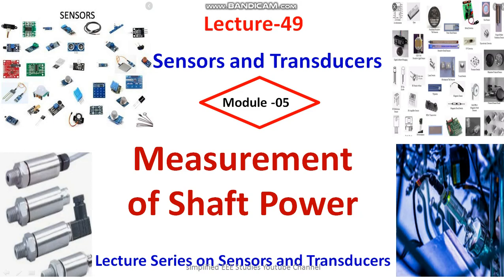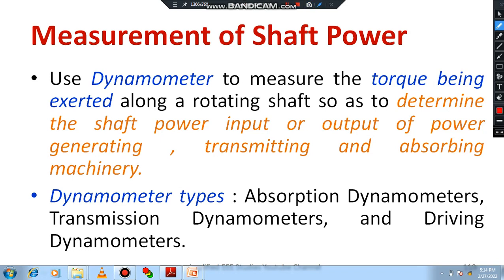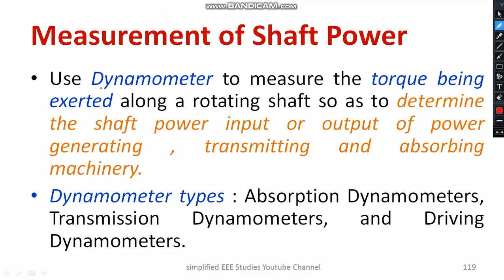Moving on to the session — how do you measure shaft power? There are different methods of measurement of shaft power. Among them, the dynamometer is one of the major techniques by which you can measure shaft power. The shaft power depends on torque and angular speed, and it can be calculated using the equation: shaft power equals torque multiplied by omega.